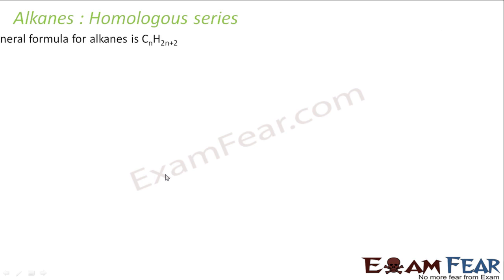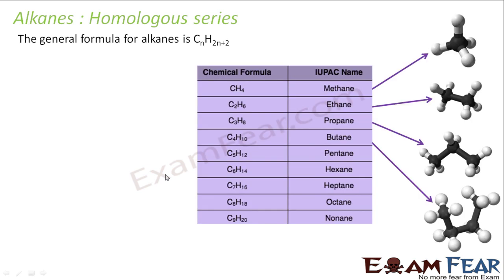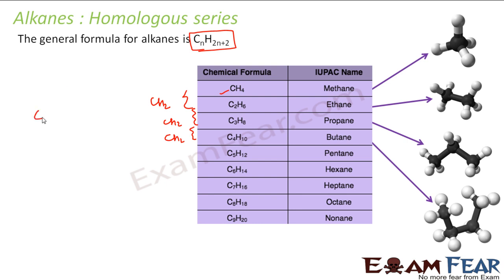Let's understand the homologous series of alkanes. The general formula is CnH2n+2. The first member is methane (CH4). The next is ethane (C2H6). The difference between these two is CH2 — one carbon, two hydrogens. You put n=1, you get C1H4, that is methane. You put n=2, you get C2H6, that is ethane.